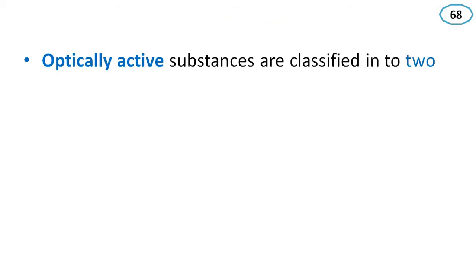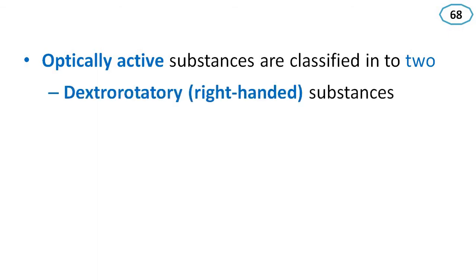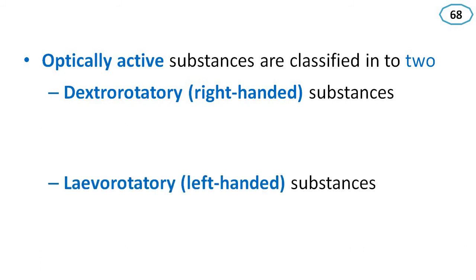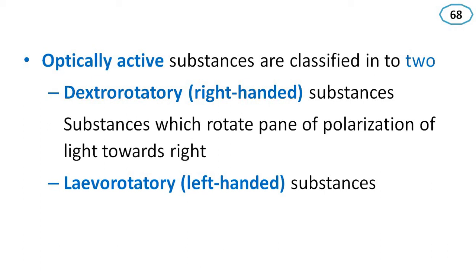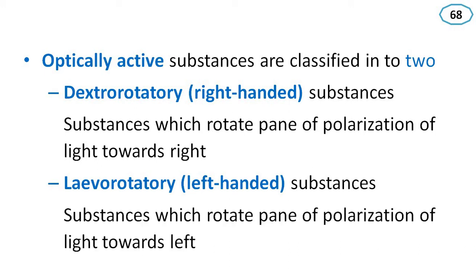There are two types: dextrorotatory and levorotatory substances. Dextrorotatory means substances which rotate the plane of polarization of light towards the right. Levorotatory means substances which rotate the plane of polarization of light towards the left.